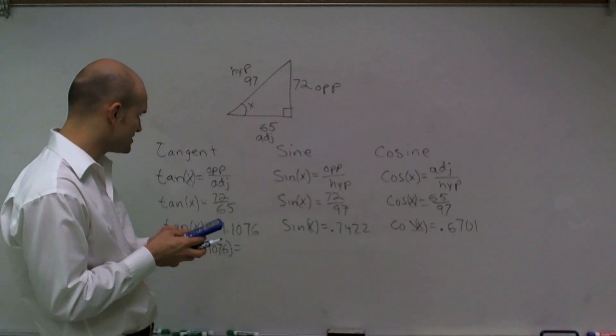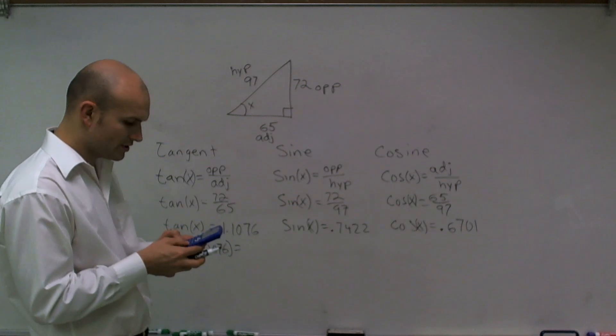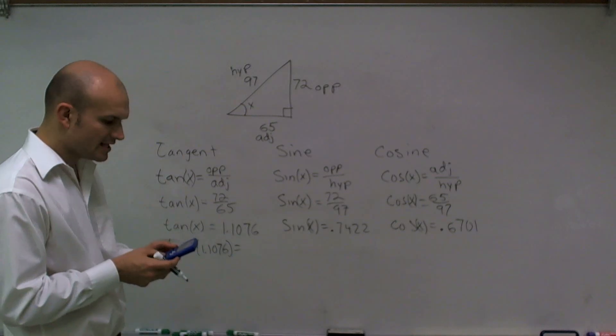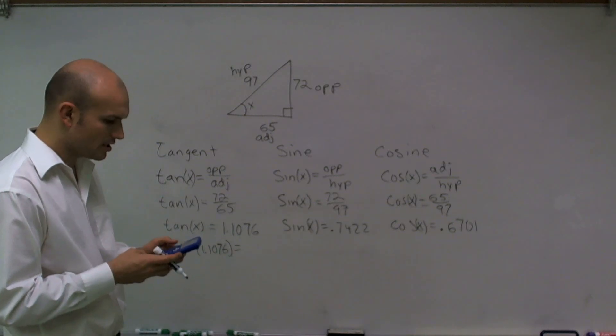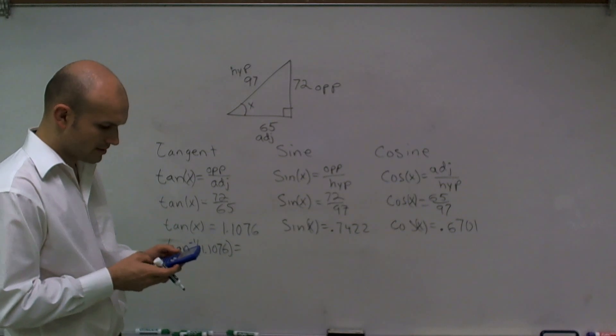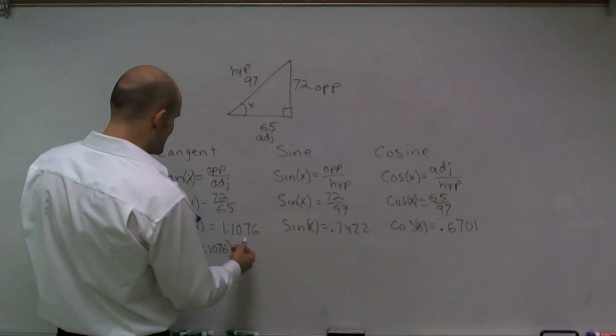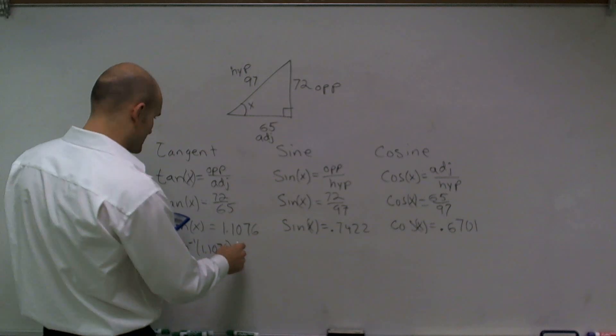Like I said, I want to make sure that you put them in correctly because I do not want you to abbreviate. I'm going to do 72 divided by 65, and then I'm going to take the inverse tangent of that answer. What I get is 47.9, and I'm going to round that to 48 degrees.